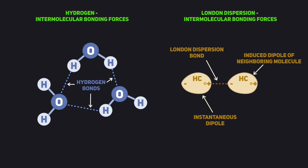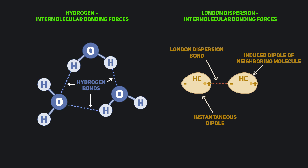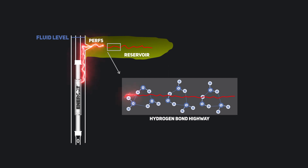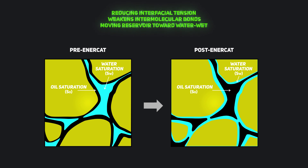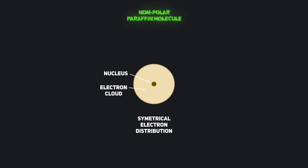Enercat weakens two primary types of intermolecular forces at perforations and up well. They are hydrogen bonding forces and London dispersion instantaneous dipole forces. In the case of hydrogen bonding forces, Enercat transmits a resonating vibrational frequency that travels on the water's intermolecular hydrogen bonds, penetrating deeply into the reservoir to the sites of interfacially locked oil.